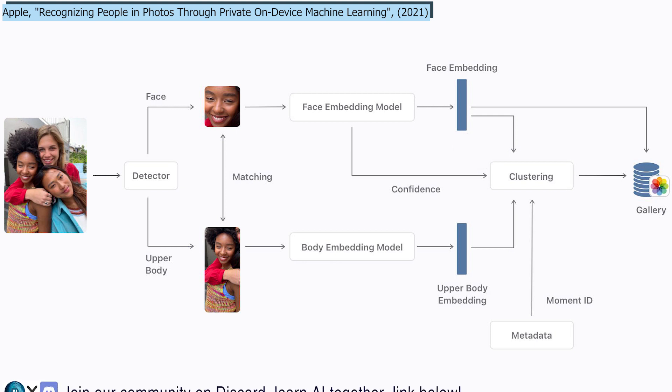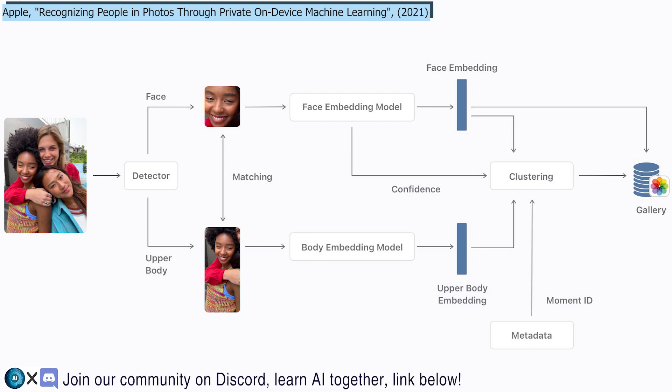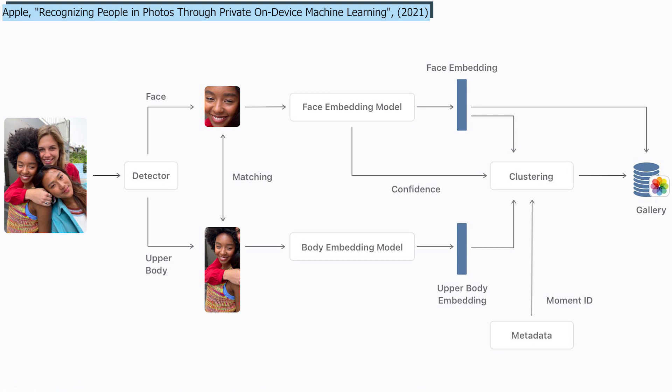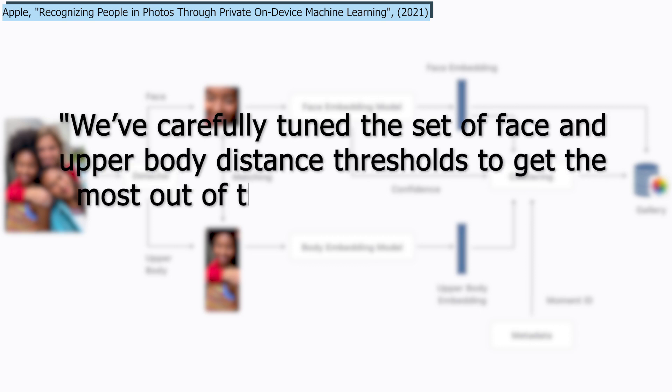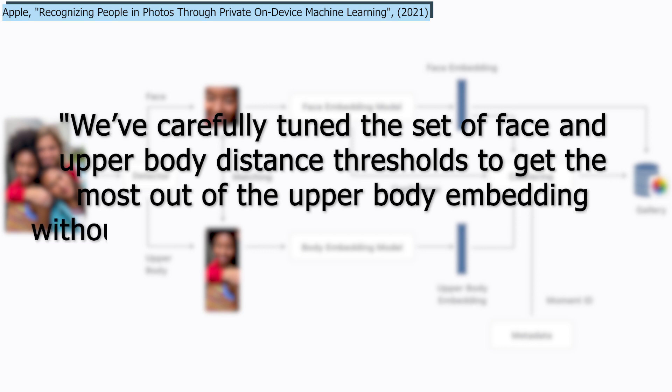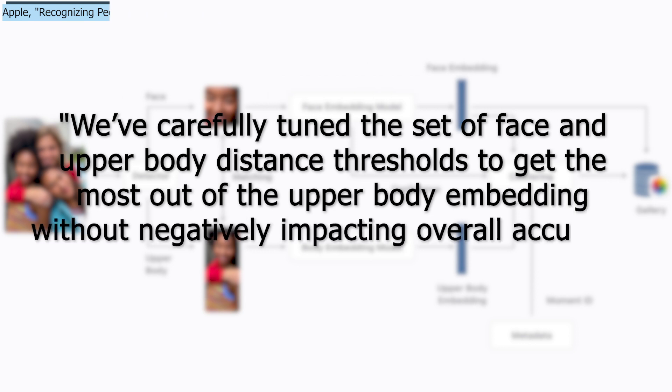To find whether it is the same person or not, they focus primarily on the face. If it's occluded or sideways, it uses the upper body coupled with what they have from the face, and takes the time of the photo into account to measure if the clothing could be the same or different. As you may suspect, the upper body isn't always helpful. As they say, they've carefully tuned the set of face and upper body distance thresholds to get the most out of the upper body embedding without negatively impacting overall accuracy.